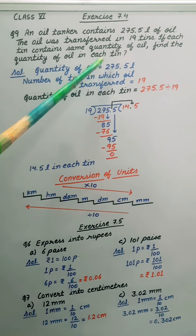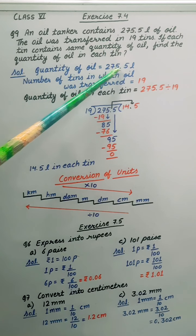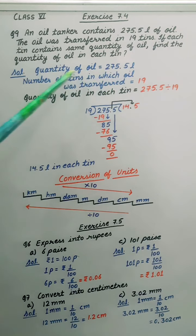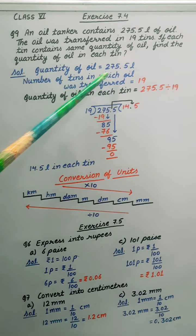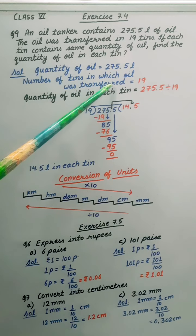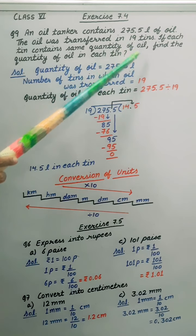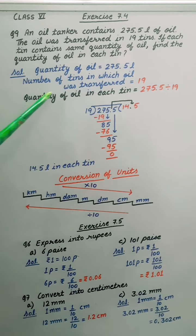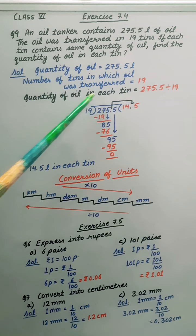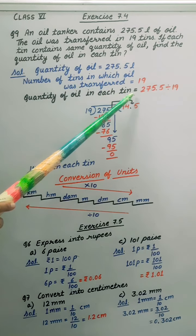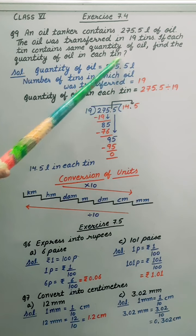Quantity of oil is given as 275.5 liter and number of tins in which this oil was transferred is given as 19. Now we have to calculate quantity of oil in each tin. So for that we will divide these two.